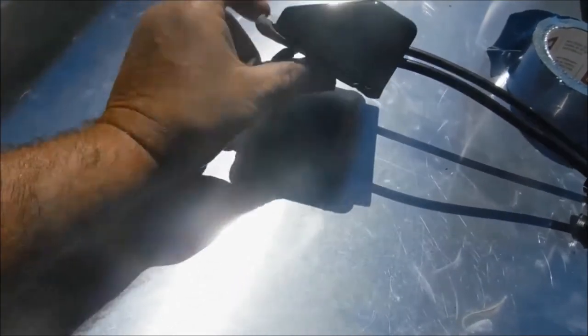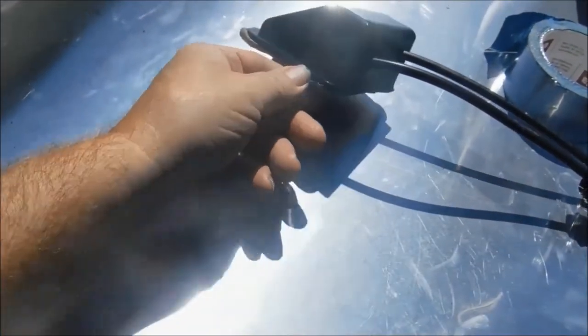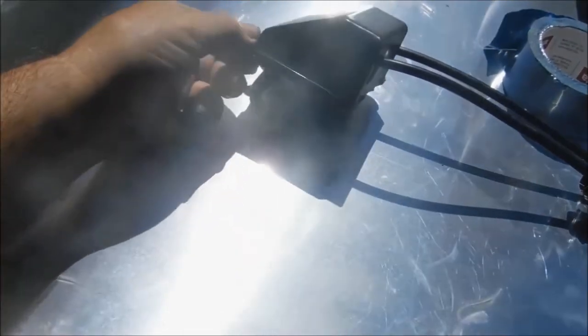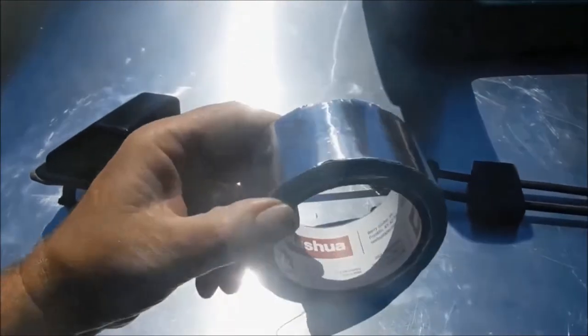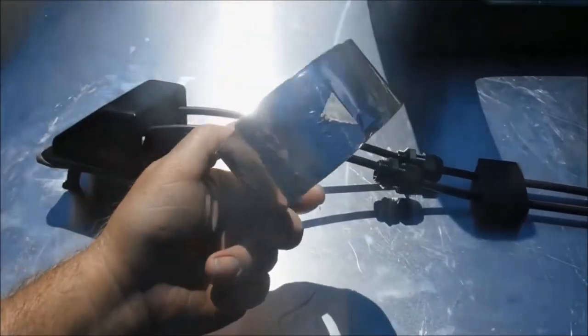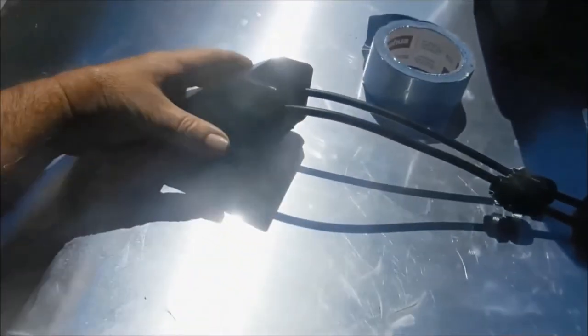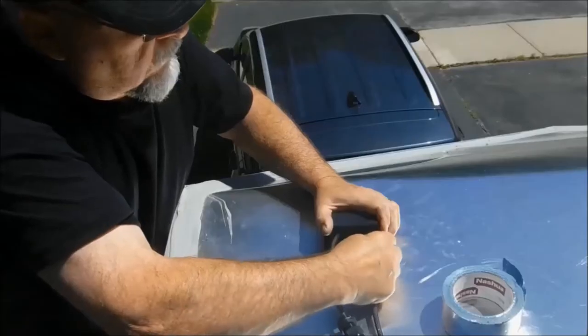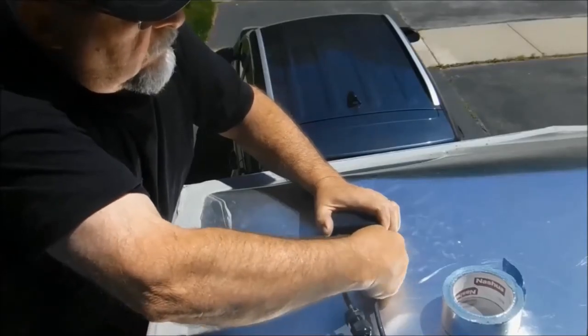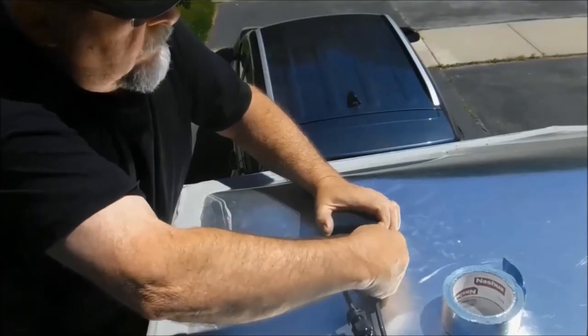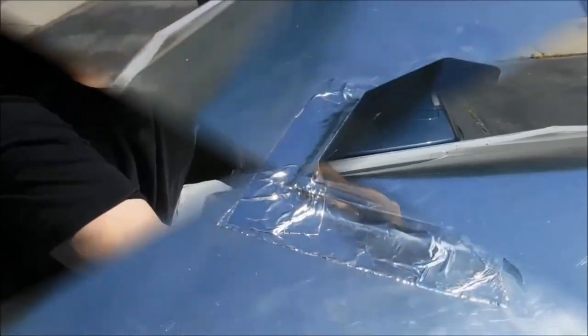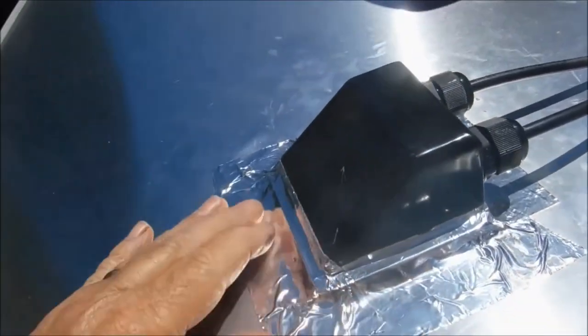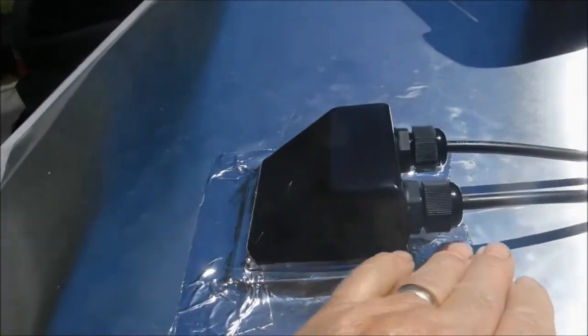Just fasten that down. The good old butyl tape should seal that pretty good. Use some of that foil roofing tape just for added insurance. So there's what it looks like with the foil tape sealing everything there. Should be good and weather tight.